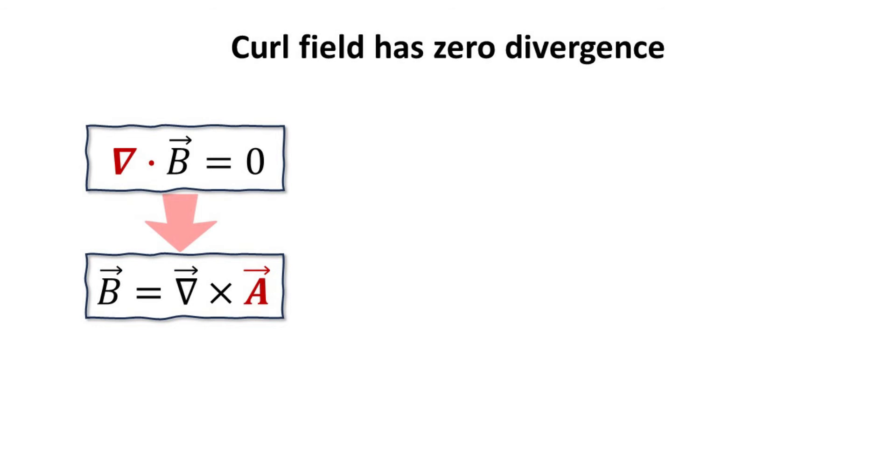One of such mathematical tricks that is crucial for solving this problem is the idea that a vector field with zero divergence can always be expressed as the curl of a vector field. Thus, the magnetic field is also a curl field.